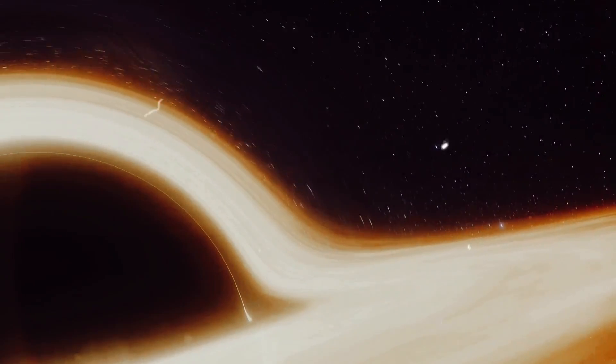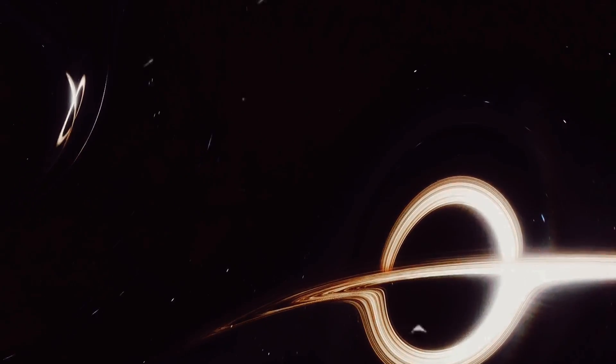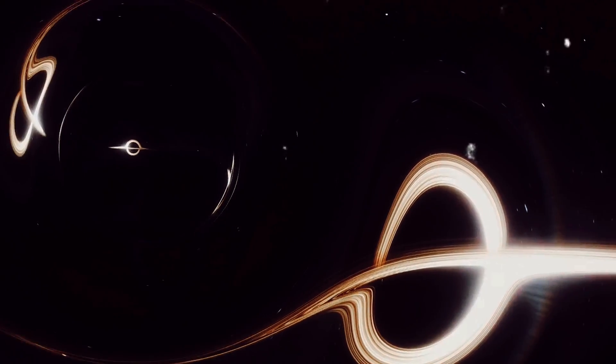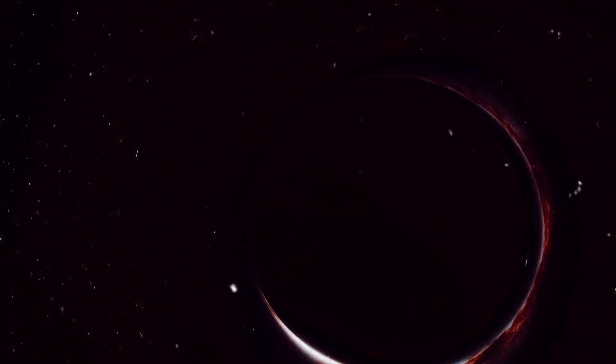The conditions on planet are unlike anything we've seen on other planets. The proximity to a black hole causes extreme gravitational forces, creating a time dilation effect. This means time on planet would pass slower compared to time on Earth. It's a concept straight out of science fiction, but on planet, it's a reality.